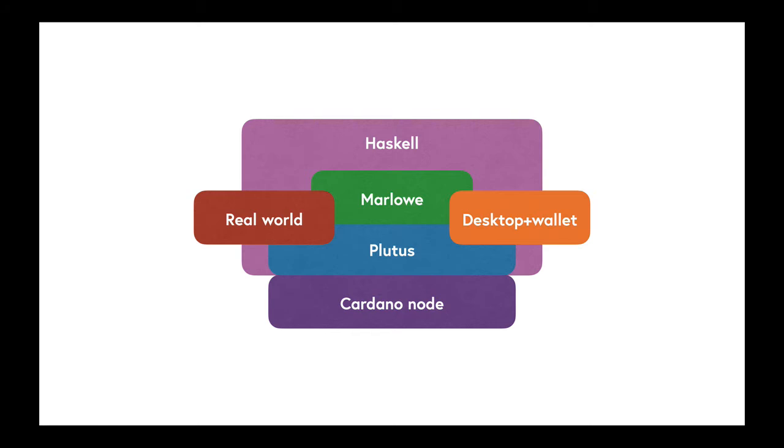Just to say a bit about where Marlowe fits on the Cardano blockchain. Running on a node, we have the general purpose functional language Plutus, which corresponds perhaps to Solidity on Ethereum. Plutus is essentially a dialect of Haskell. On top of Plutus, we run Marlowe, our domain-specific language for financial contracts. That has to interact with the real world, with oracles, and through someone's desktop or mobile app with their wallet.